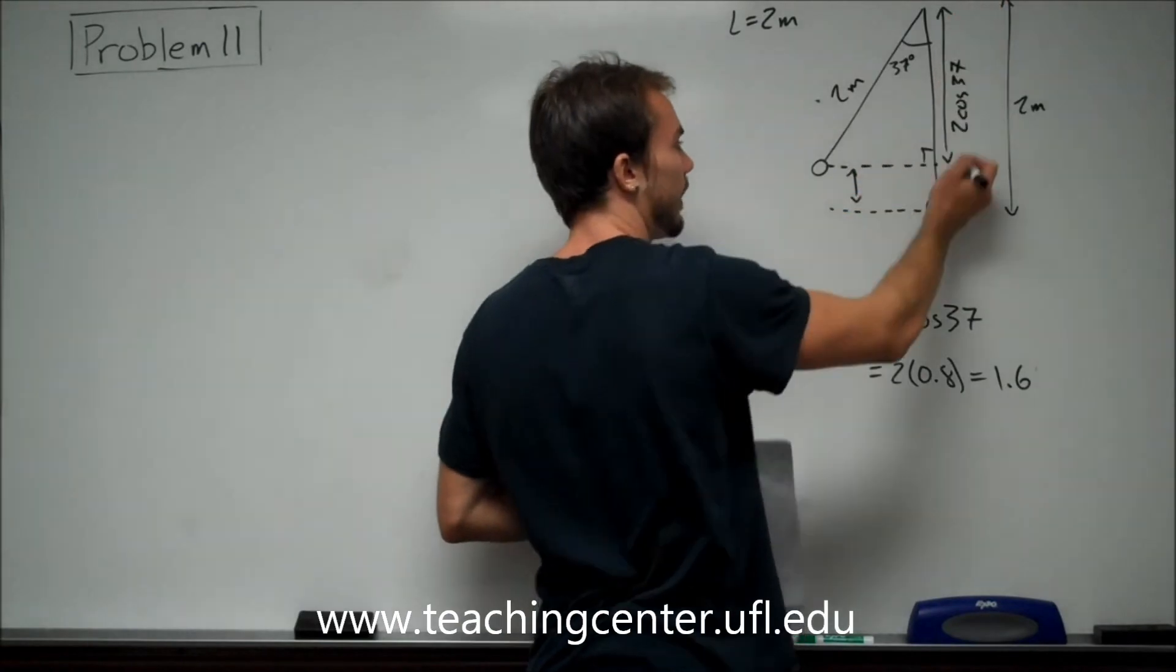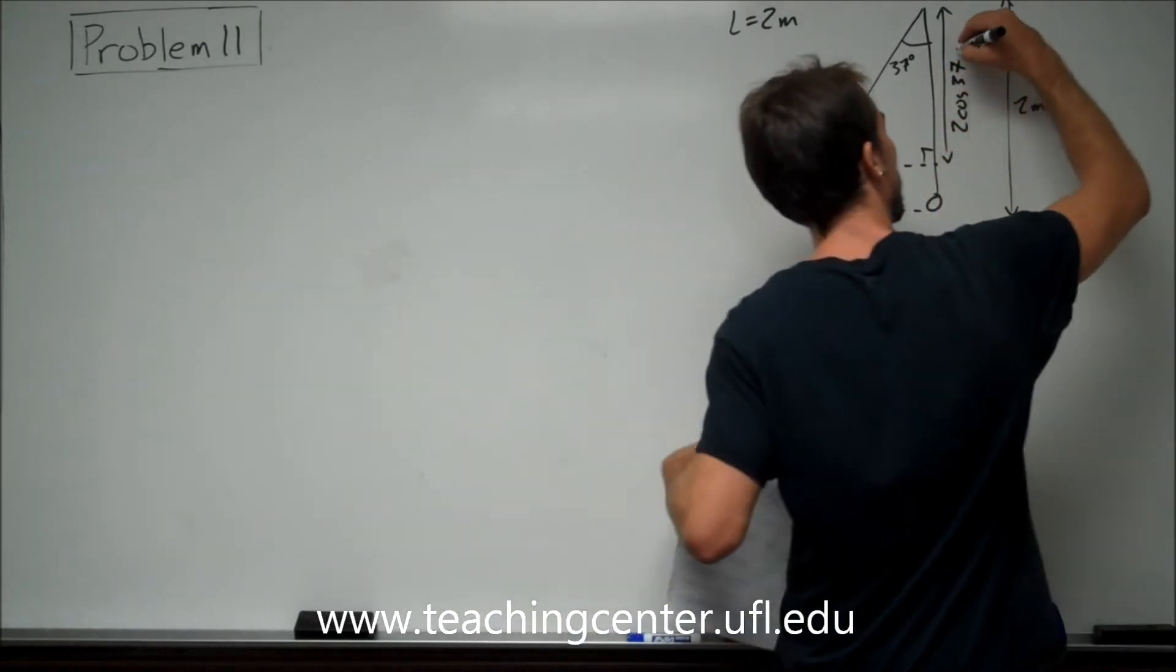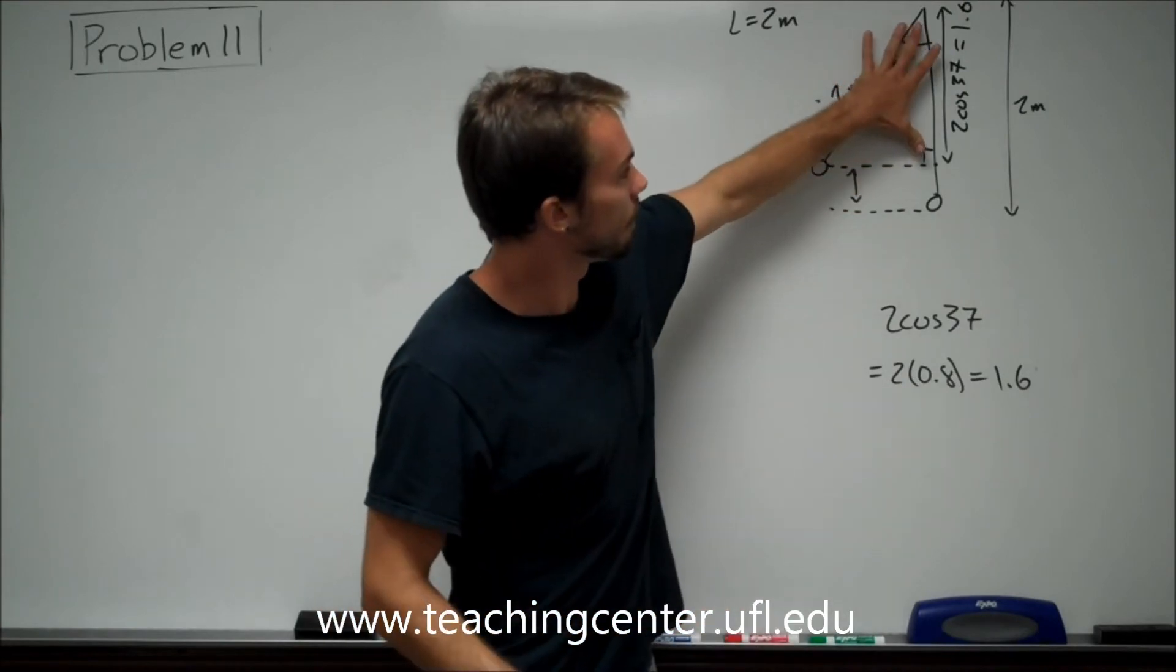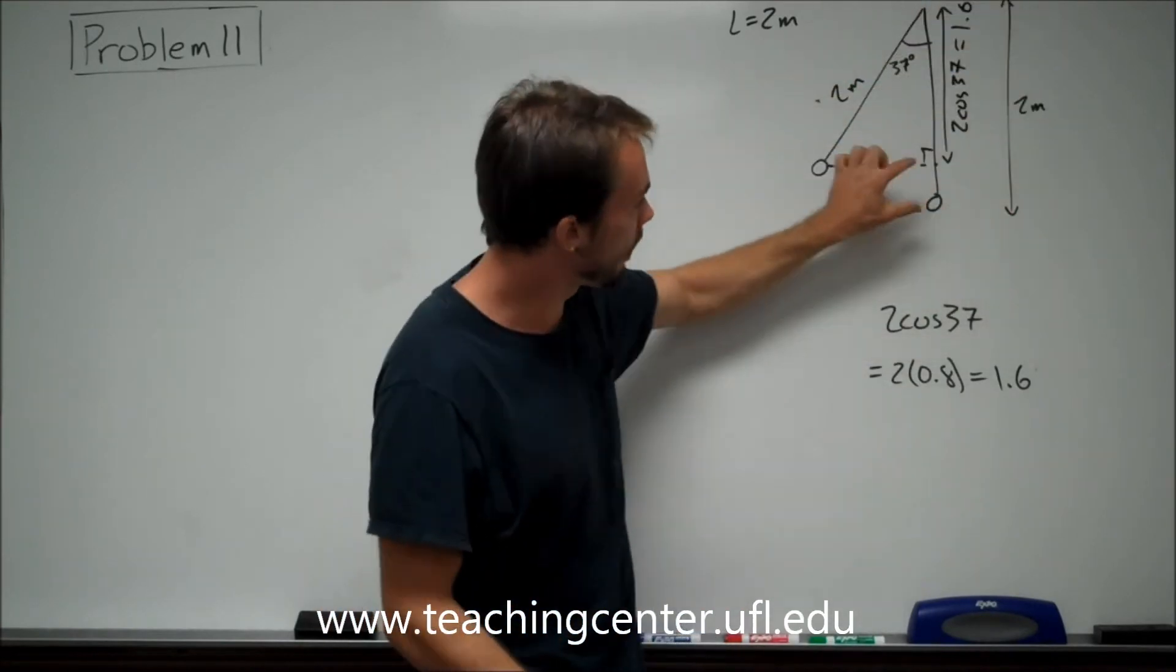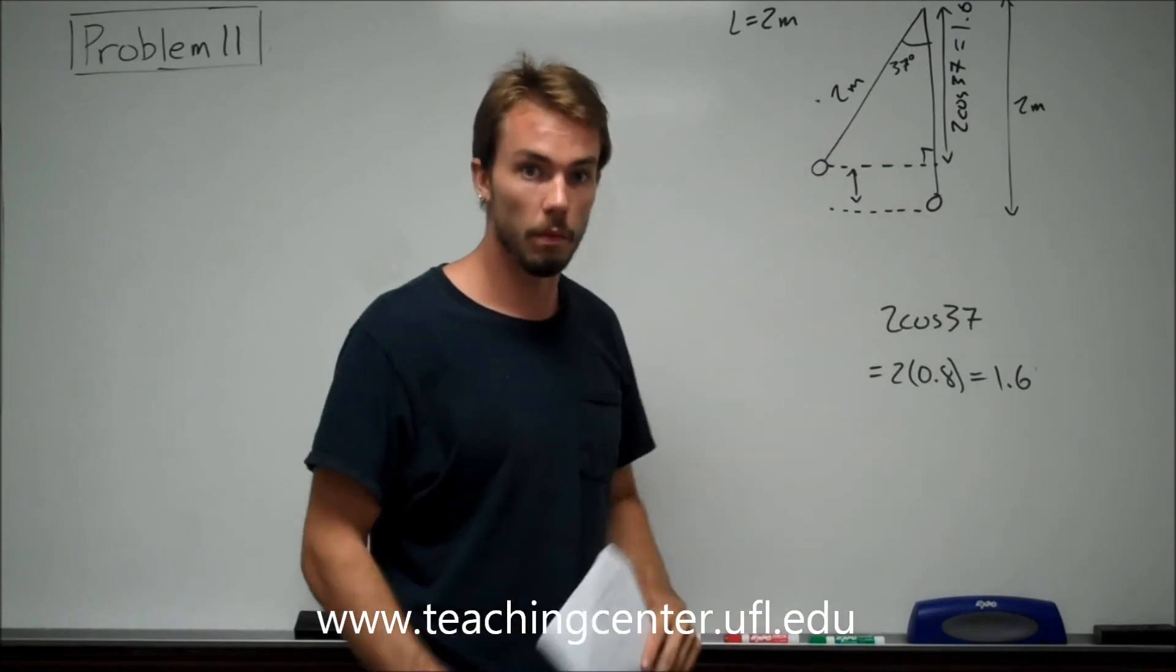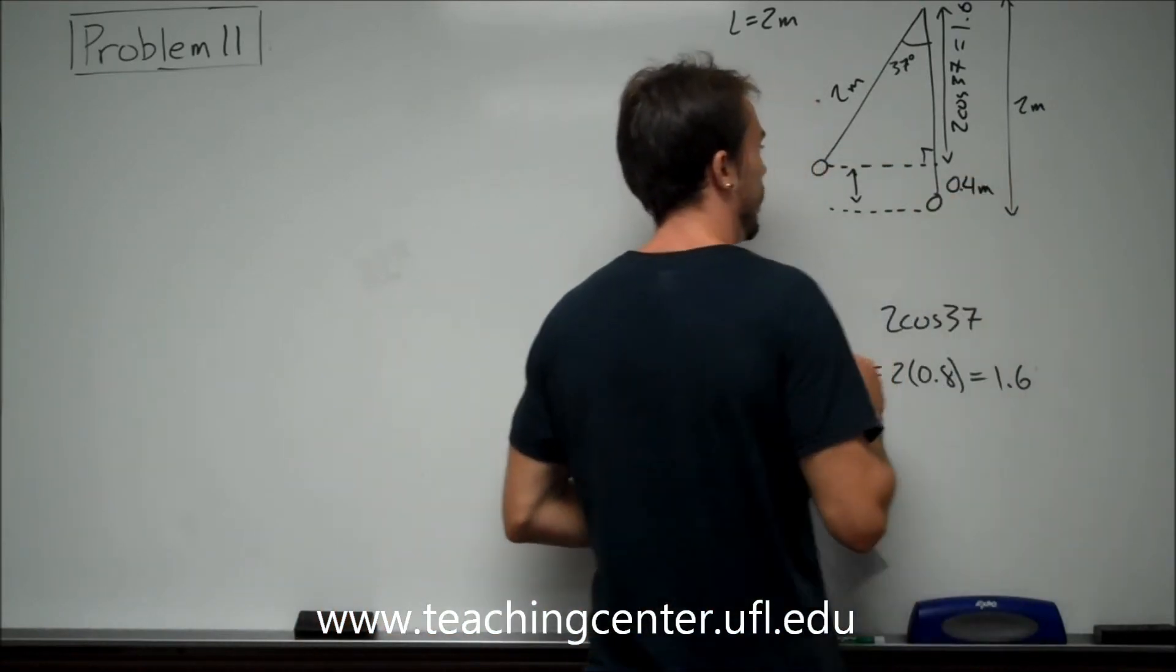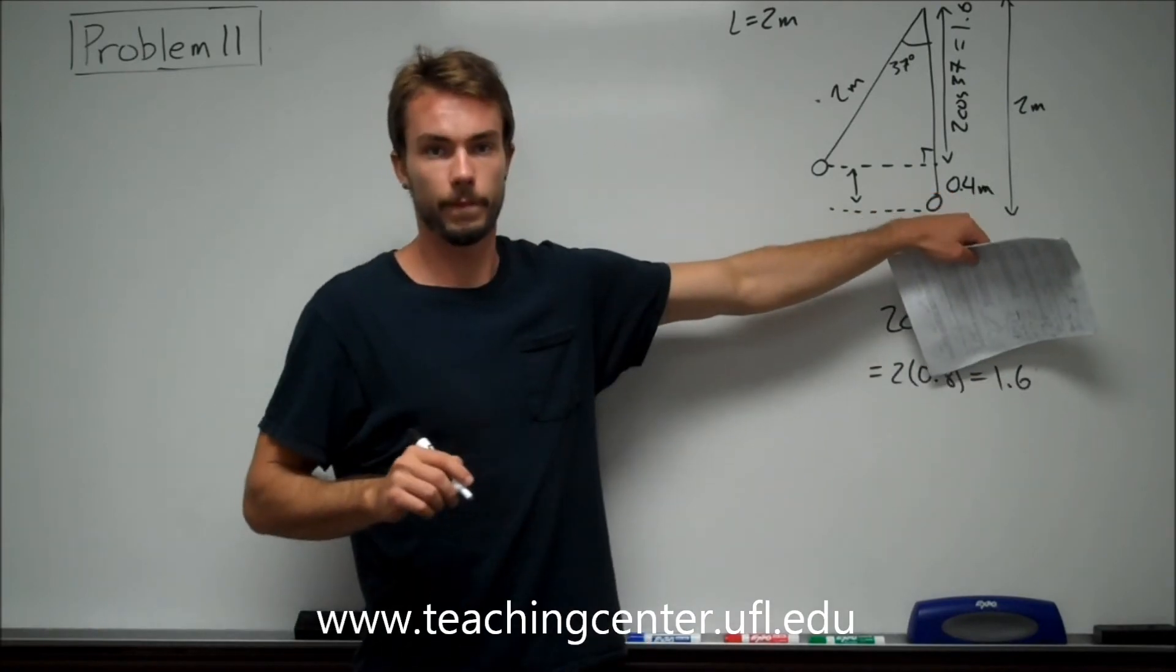So we know this entire length right here is 1.6. So if this length is 1.6 and the entire length of the string is 2 meters, then this little bit right there has got to be 0.4. So that's going to be our height.